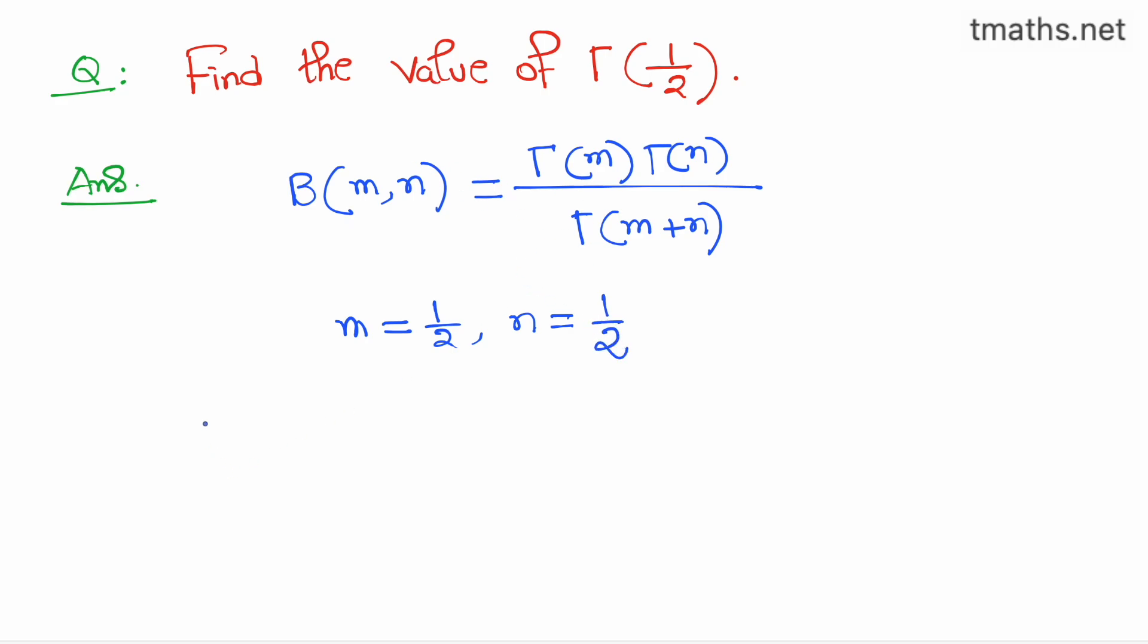By doing so, we have B(½, ½) is equal to gamma half times gamma half divided by gamma of half plus half.